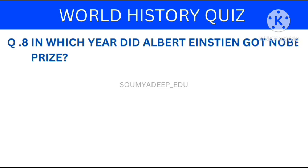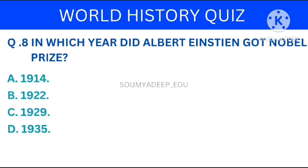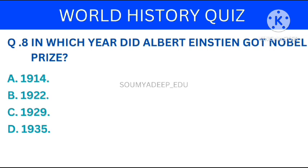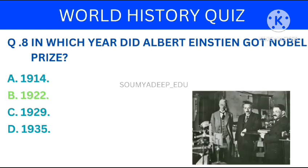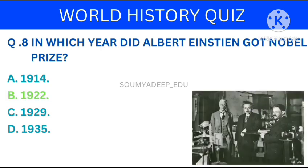So let's move to the next question. In which year did Albert Einstein receive the Nobel Prize? The options are: 1914, 1922, 1929, 1935. Your time starts now. The answer is 1922.